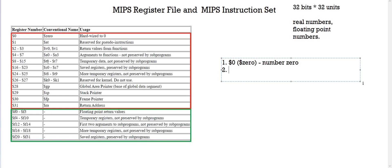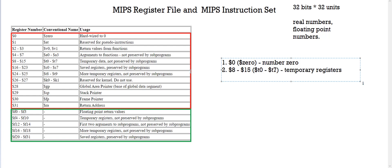Next we have our temporary registers: register number 8 to register number 15, conventionally called t0 to t7. The number is the actual register file number, but the name is what we use in MIPS code. The conventional name is the standard way of calling each register. You can encounter both types of naming in questions, but whenever you're writing MIPS code, always use the conventional name.